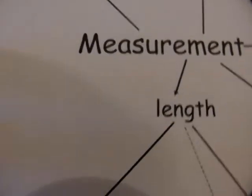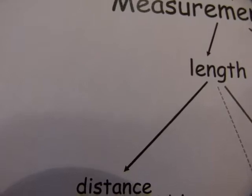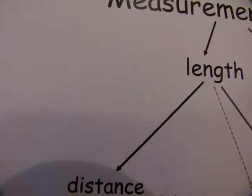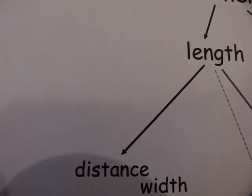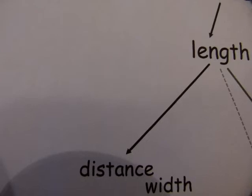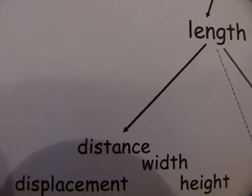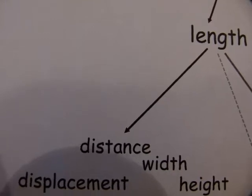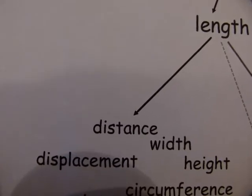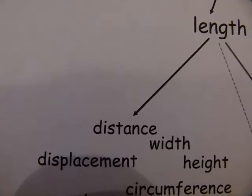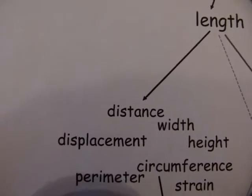There are a bunch of other words that work and mean the same thing as length. The first one is distance — we all agree that distance is the same as length. Another one is width — a little controversial, but width and length and distance are still the same concept. Consequently, height is all length, and displacement is still referring to length. If matter is not in a straight line and has curvature to it, then it's circumference — and circumference is still length. Also, perimeter and strain are all length; strain is used in engineering.